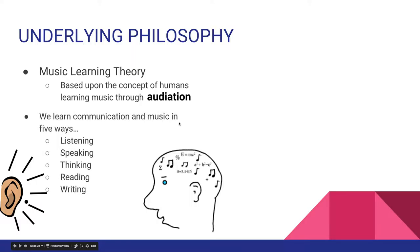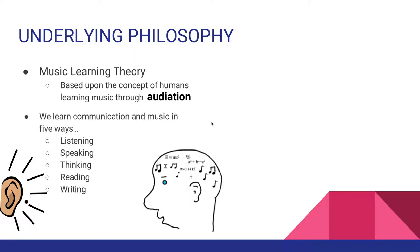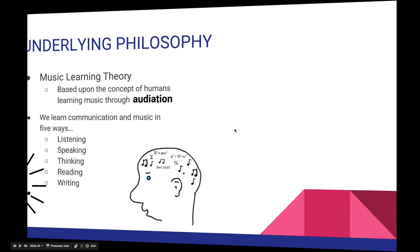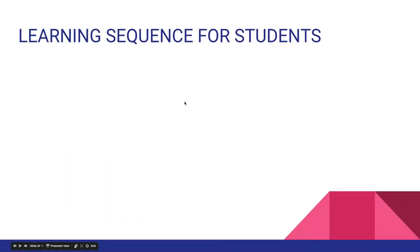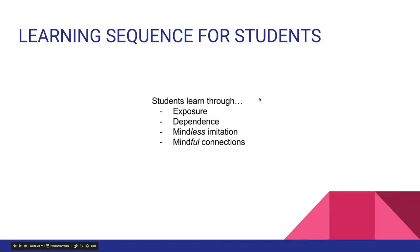We learn communication and music in five ways: through listening, speaking, thinking, reading, and writing. The learning sequence for students involves exposure, dependence, mindless imitation, and mindful connections.